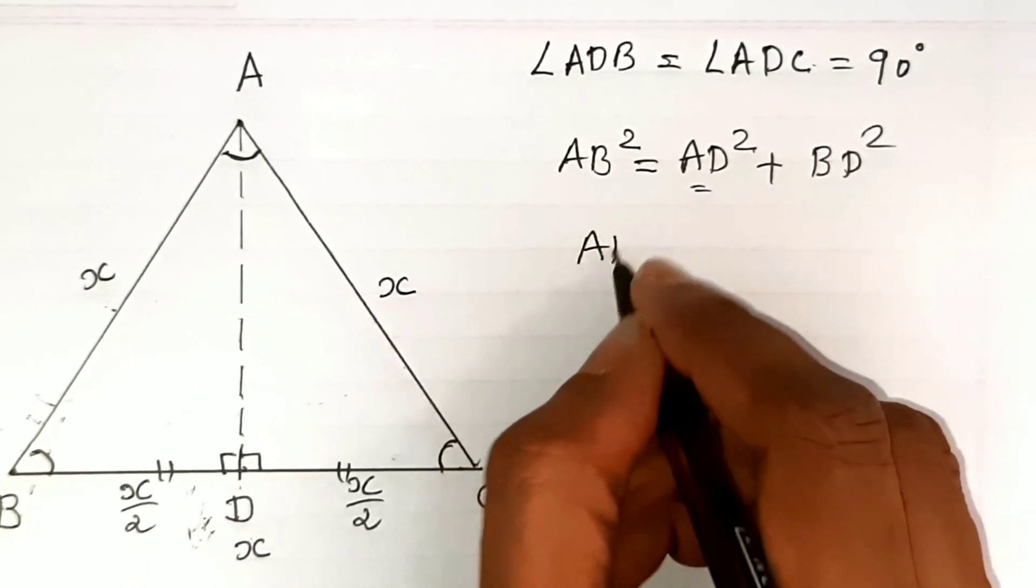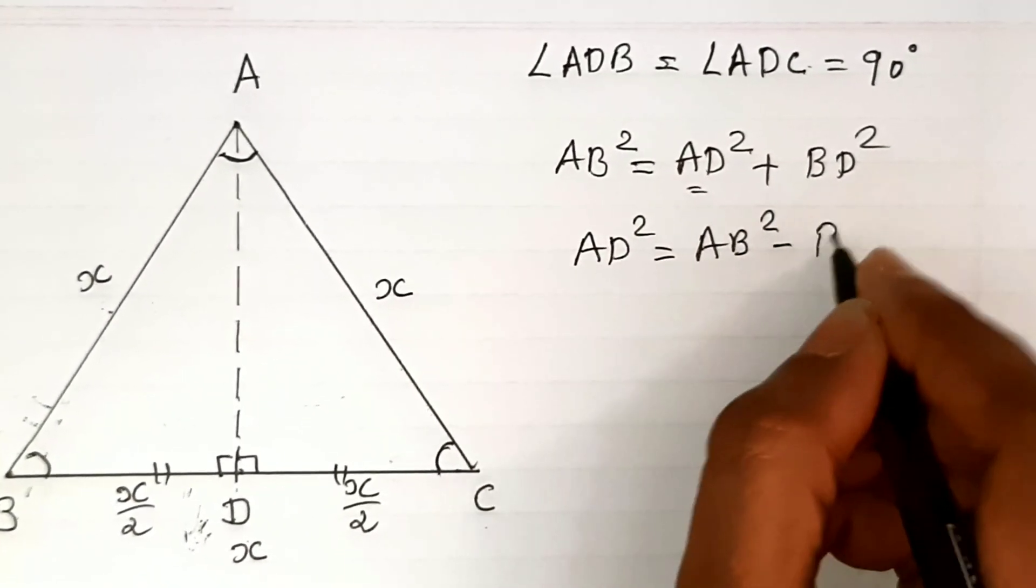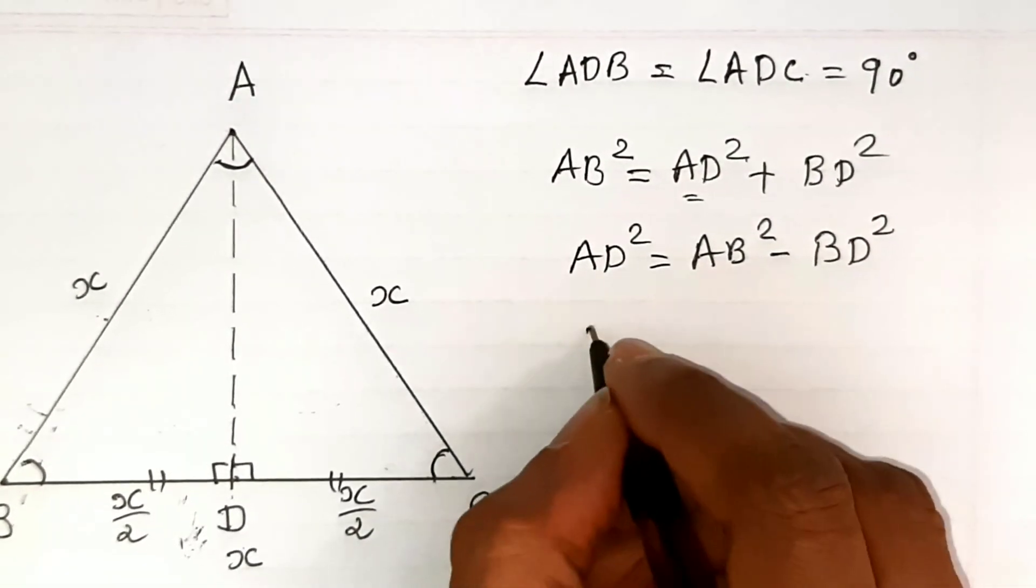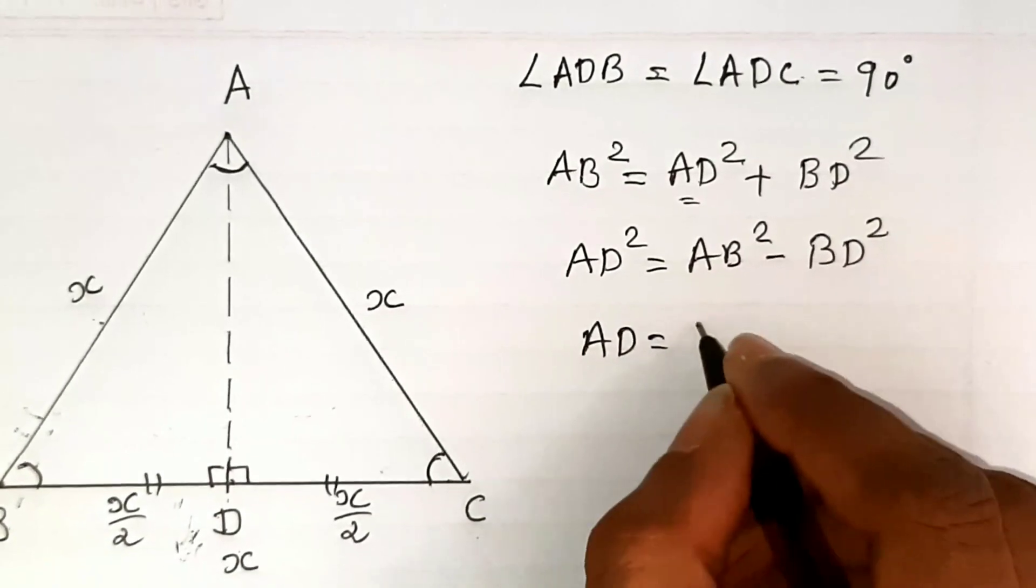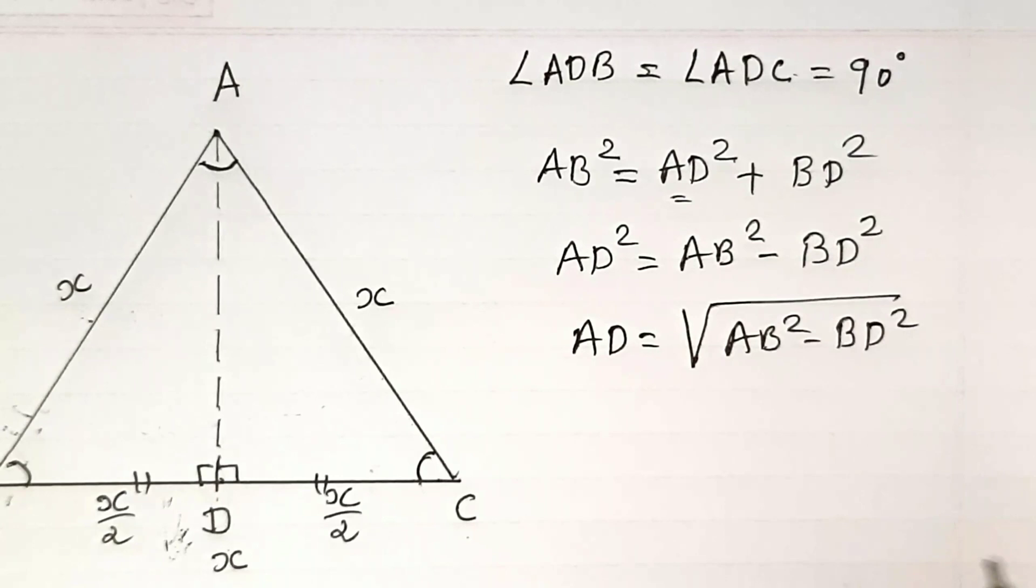We need to find AD, so AD squared equals AB squared minus BD squared. We have AD equals the square root of AB squared minus BD squared.